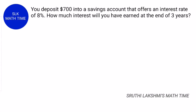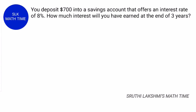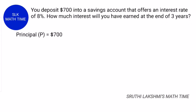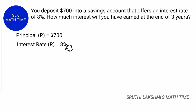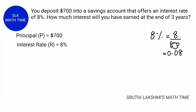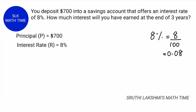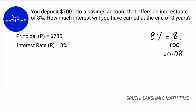Let's see another problem for easy understanding. You deposit $700 into a savings account that offers an 8% interest rate. How much interest will you have earned at the end of 3 years? So, the principal is $700 and the interest rate is 8%. Remember, always change a percent to a decimal when calculating. To change a percent to a decimal, we do 8 divided by 100, which equals 0.08. So, the interest rate is 0.08.